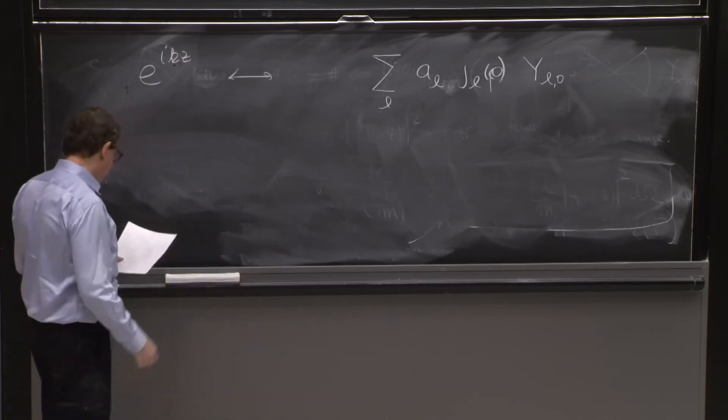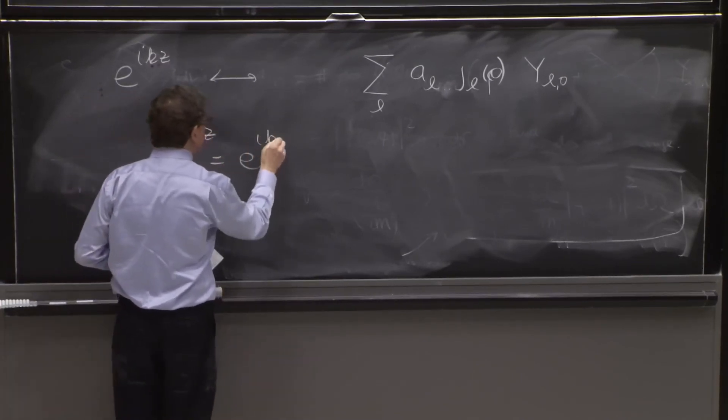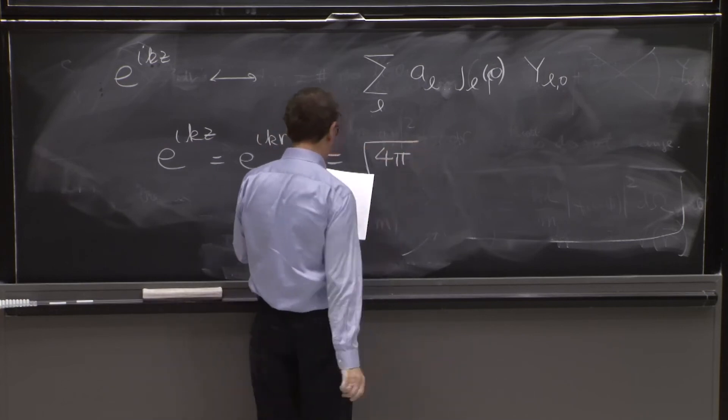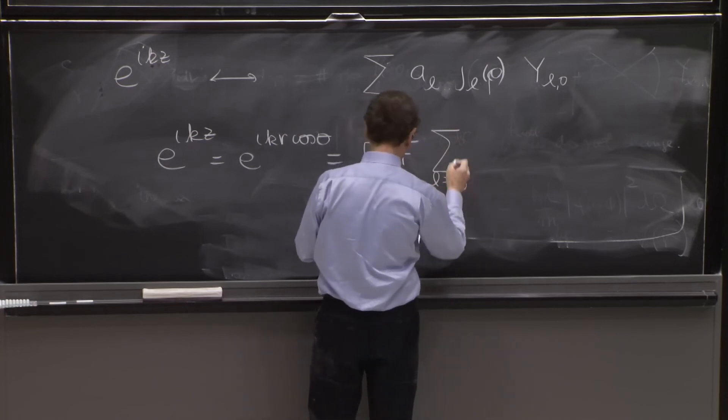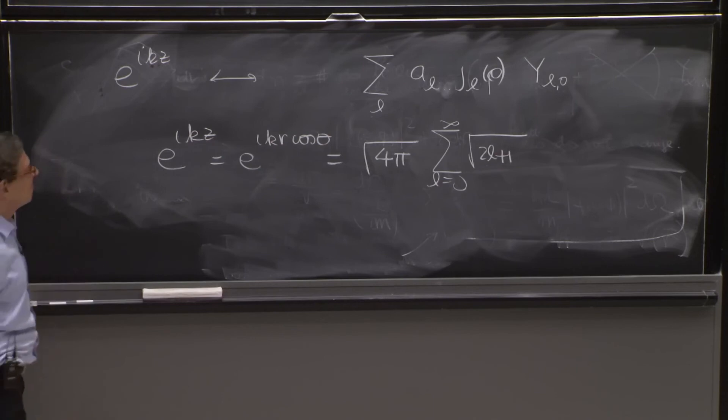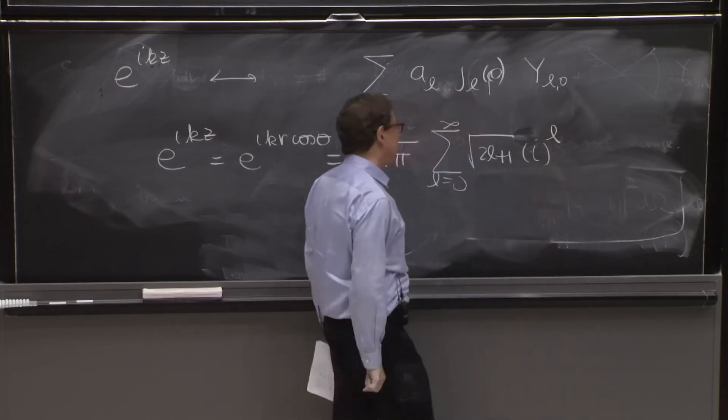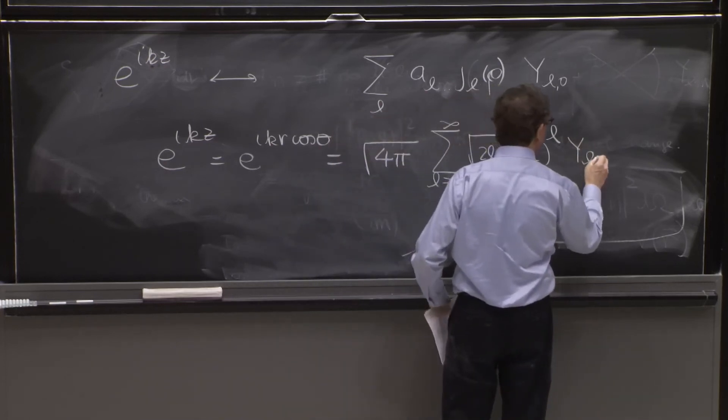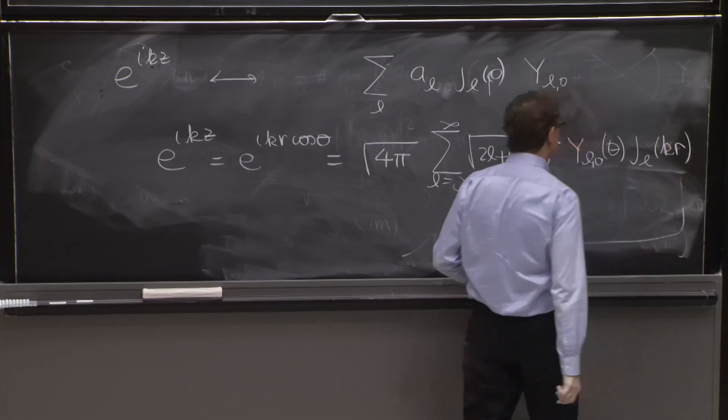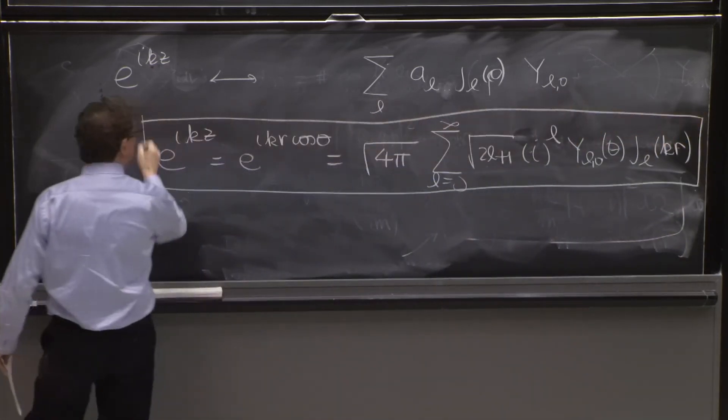And perhaps even you could discuss this in recitation. e to the ikz, which is e to the ikr cosine theta, is the sum: square root of 4 pi, sum from l equals 0 to infinity, square root of 2l plus 1. Coefficients are pretty funny. They get worse very fast. Now you have i to the l, i to the l, Y_l0 of theta. That's independent of phi. j_l of kr. This is the expansion that we need. There's no way we can make progress with this problem unless we have this expansion.